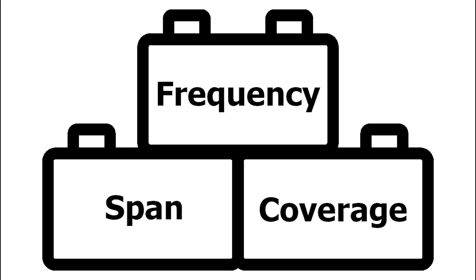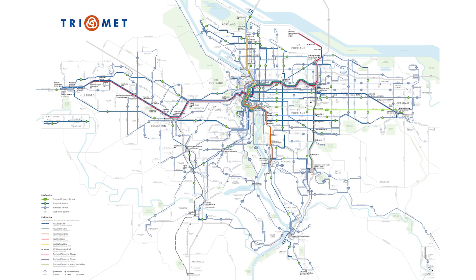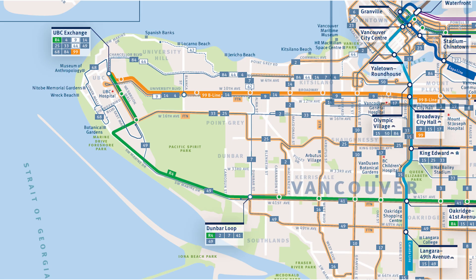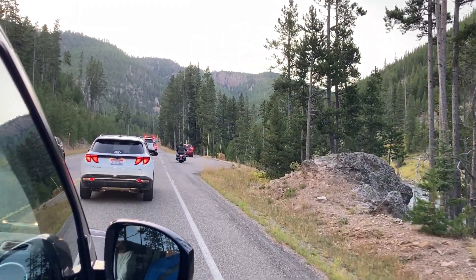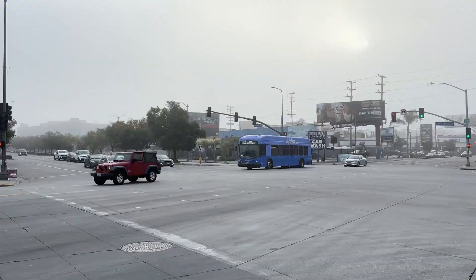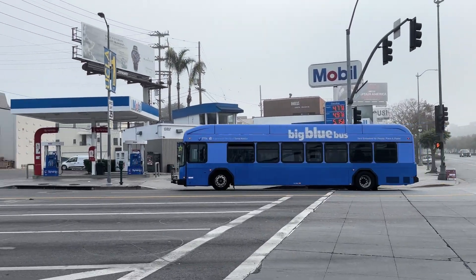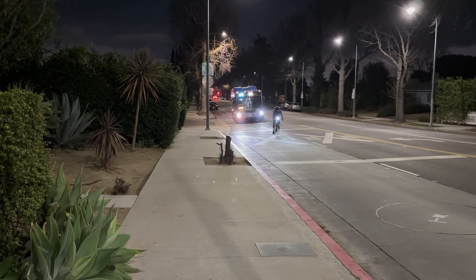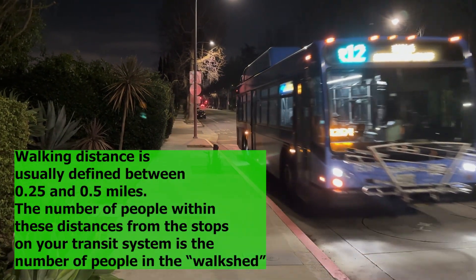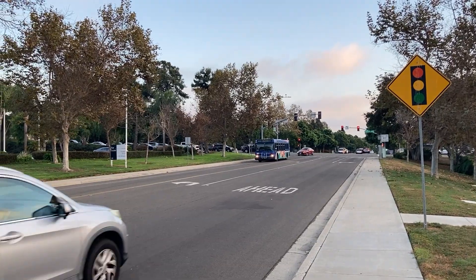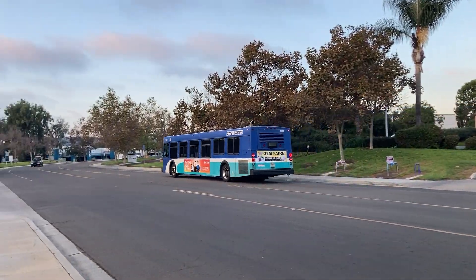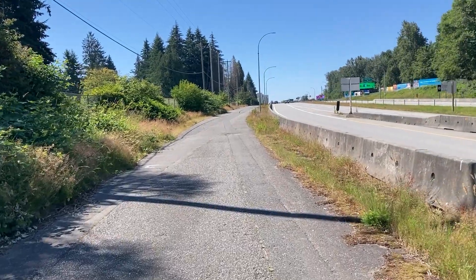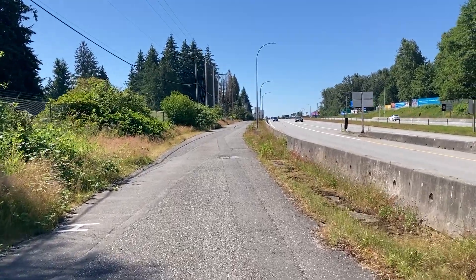The final and arguably most important building block of a transit system is coverage. Coverage is simply where your transit system serves. More coverage is usually better since it means you're serving more places and therefore more people. If someone doesn't have a bus route nearby, they're probably not going to take the bus, so ensuring everyone has good access to transit is the main goal of having good coverage. Good coverage can also speed up your overall trip by reducing how far you have to walk, roll, bike, or drive to access transit.